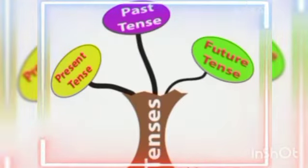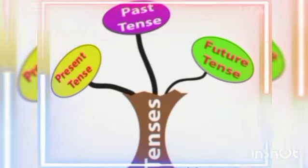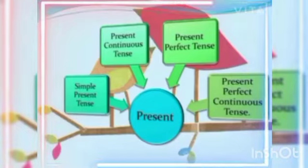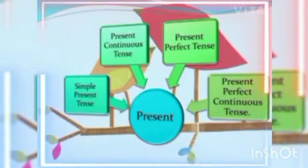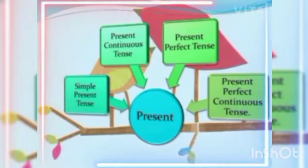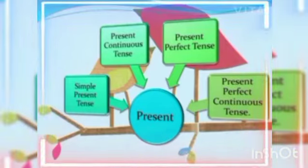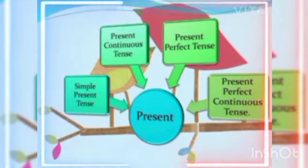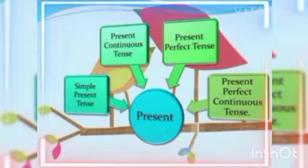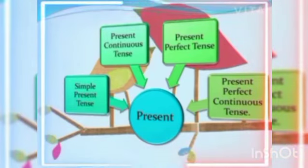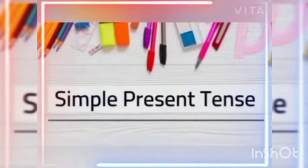Now, we will learn about each type of tense one by one. Let's start with the present tense. Present tense can be in four forms: simple present tense, present continuous tense, present perfect tense, and present perfect continuous tense. Today in this video, we will learn about the simple present tense.